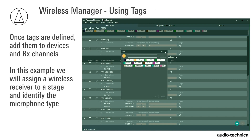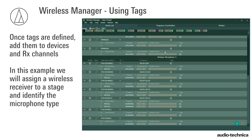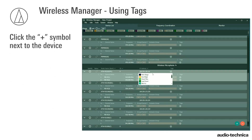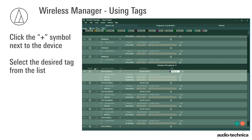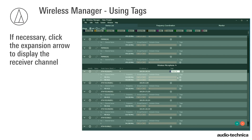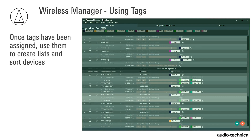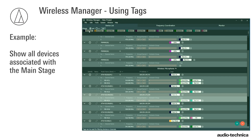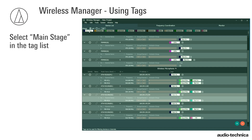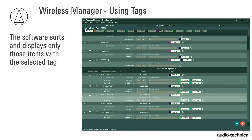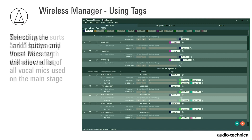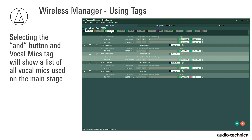In this example, we will assign a wireless receiver to a stage and identify the type of microphone. Click the plus symbol next to the device. Select the desired tag from the list and it appears. If necessary, click the expansion arrow to display the receiver channel. Multiple tags can be added to devices and wireless channels. Once tags have been assigned to devices and channels, use them to create a list and sort devices. For example, to see all devices associated with the main stage, simply select Main Stage in the tag list. The software sorts and displays only those items with the selected tag.